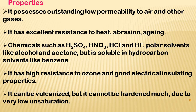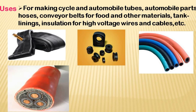The properties of butyl rubber include outstanding low permeability to air and other gases, meaning it is not easily oxidized. It has excellent resistance to heat and chemicals including sulfuric acid, nitric acid, HCl, and other polar solvents, as well as high resistance to ozone. It can be vulcanized but cannot be hardened much, since vulcanization depends on double bonds and butyl rubber has less unsaturation. Uses include conveyor belts, insulation pipes, tank linings, cables, solder parts, and tubes.